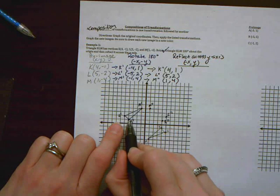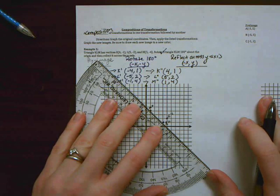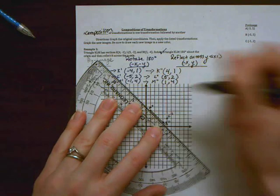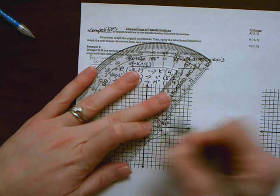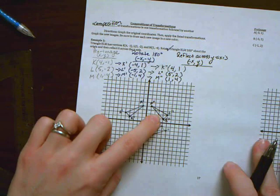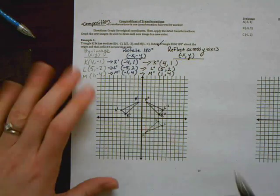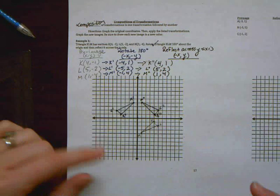You can see that we've taken this. It was one point to the left. Now it's one point to the right. K was four points to the left. Now it's four points to the right. So we've just reflected over that y axis. And when I connect those points, I have my final image, which is a composite of transformations to get this here.